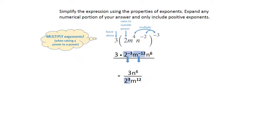The last thing that needs to be done is raise 2 to the 3rd power. You still have 3 and n to the 6th in the numerator, and in the denominator 2 to the 3rd power is 8, and then you still have m to the 12th power. Remember, the 3 and the 8 can't be simplified and the n and the m can't be put together, so that's your final answer in simplest form.